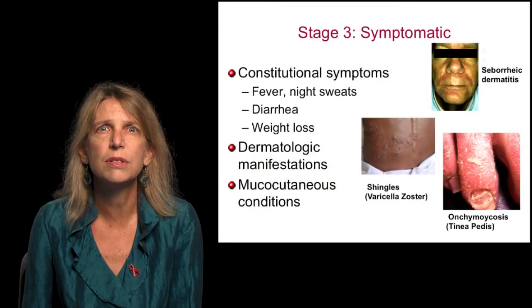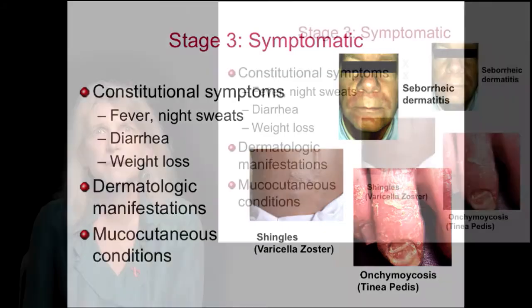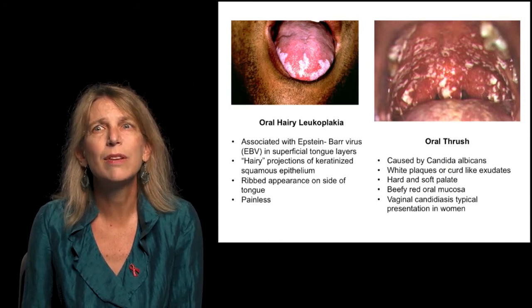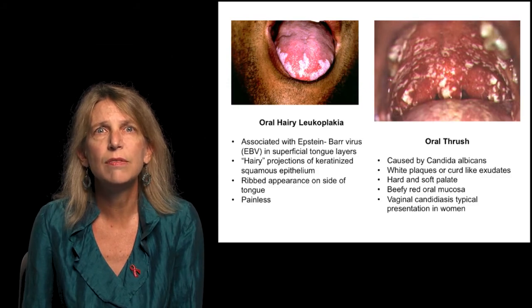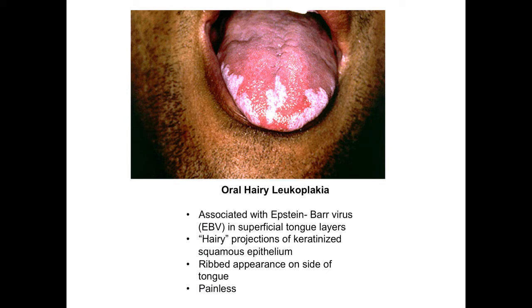Mucocutaneous conditions are also very common. Patients can develop shingles due to varicella zoster, also onychomycosis such as tinea pedis. Oral hairy leukoplakia is one of the characteristic manifestations of HIV. It is associated with Epstein-Barr virus, which infects superficial tongue layers. Its name comes from the hairy projections observed in the keratinized squamous epithelium. As shown here, it is characterized by a ribbed appearance on the side of the tongue. It is painless.